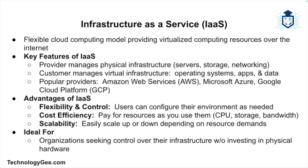Infrastructure as a service is the most flexible cloud model. It provides virtualized computing resources over the internet. The provider manages the underlying physical infrastructure such as servers, storage, and networking, but the customer manages everything else including the operating system, applications, and data. Popular providers include Amazon Web Services, Microsoft Azure, and Google Cloud Platform. Advantages include flexibility and control to configure environments as needed, cost efficiency by paying only for resources used, and easy scalability.